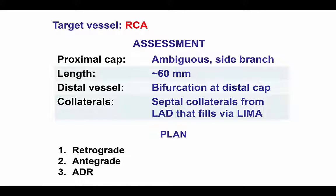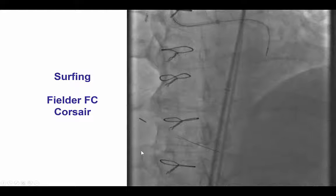Therefore, given the ambiguous proximal cap as well as the bifurcation on the distal cap, the decision was to perform a primary retrograde approach, with antegrade crossing reserved for retrograde failure.